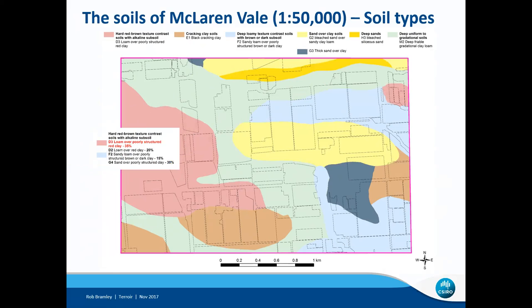Even though this pink area is mapped as the D3 soil, there's actually only a 35% chance that in that area it is indeed D3. These D3 soils are formed from fine textured alluvium, but the G4 soils — of which there's a 30% chance of occurring in these pink areas — are derived from the so-called Blanchtown clay. Those two different soils can be expected to have very different soil hydraulic properties and plant water availability, and one might expect the expression of the soil component of terroir to be quite different between them, even though they're mapped in the same class.